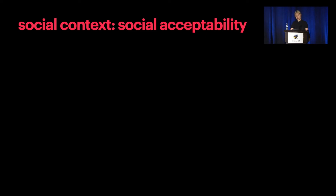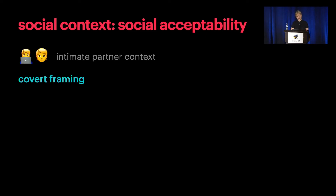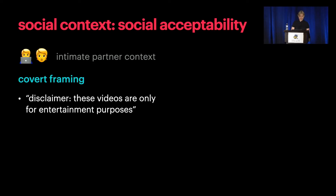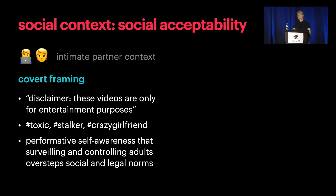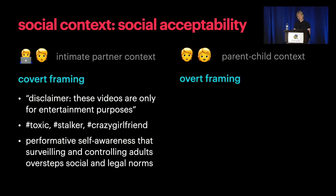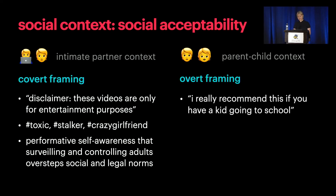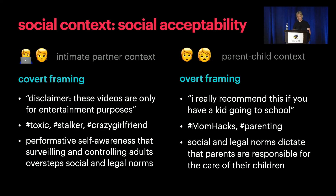Thinking about the social context of the advice we observed, we saw that social acceptability norms informed the language that creators used to frame their advice. In the intimate partner context, the videos had a covert framing. They put fake disclaimers at the beginning saying these videos are only for informational purposes, but then went into precise detail about how exactly to use the technique. The videos used hashtags like 'toxic,' 'stalker,' or 'crazy girlfriend,' because surveillance and control against another adult is typically seen as socially unacceptable. In the parent-child context, however, the videos had an overt framing—directly giving advice like 'I highly recommend this if you have a child going to school,' tagged with 'mom hacks' or 'parenting,' because parents were open about these techniques being used for child safety, which aligns with social and legal norms.